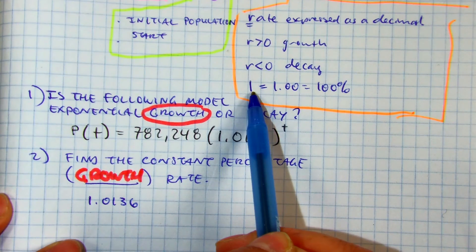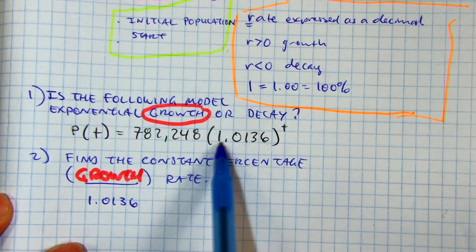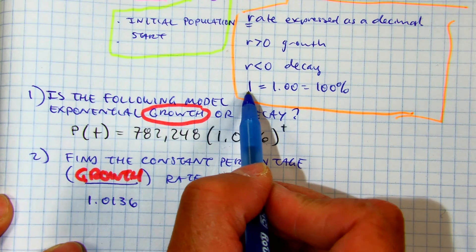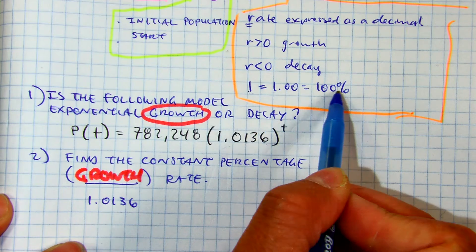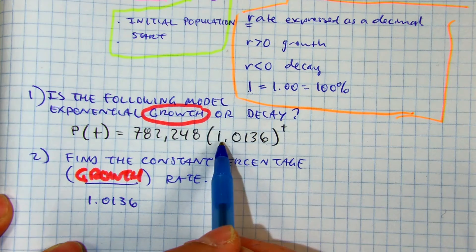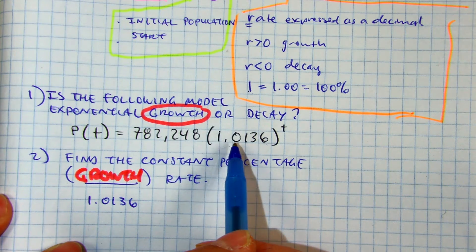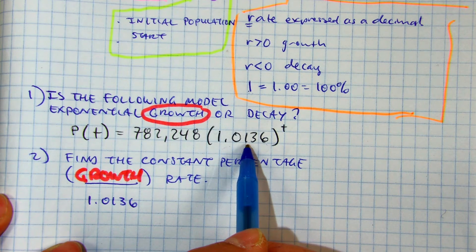When your rate is, in this case, above 1, just think of like money, $1, $1 and something cents. This is 100%, so this is really like 101% growth.